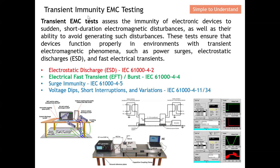Before we go into the discussion on transient immunity testing, we need to understand the two different types of immunity under EMC testing. The first one is continuous immunity EMC testing, which consists of radiated immunity and conducted immunity. From this video onward I will concentrate on the transient, so let's quickly understand what transient EMC testing actually is.